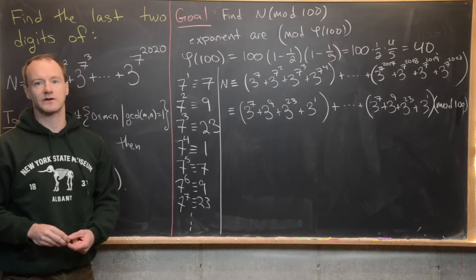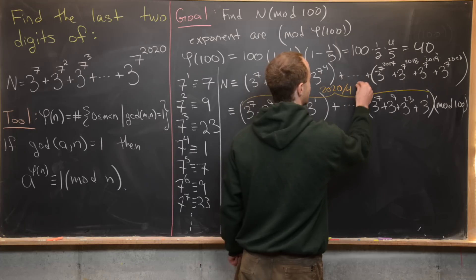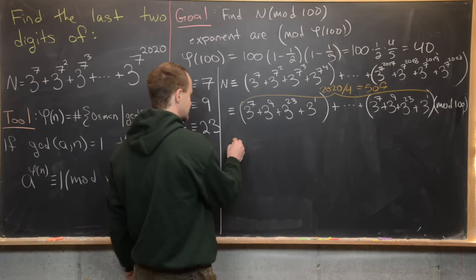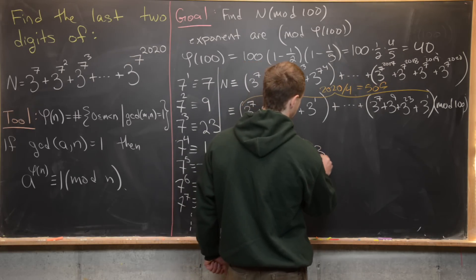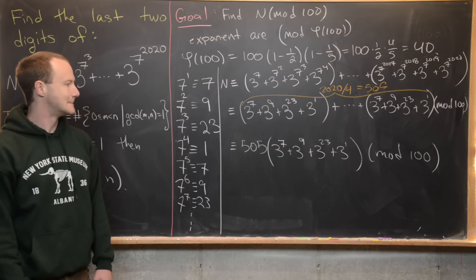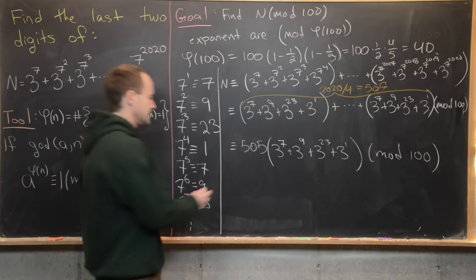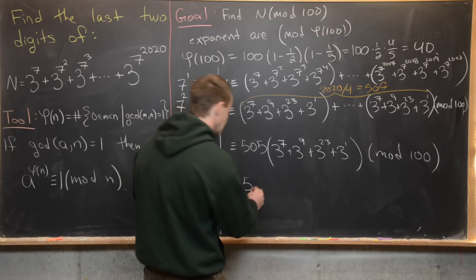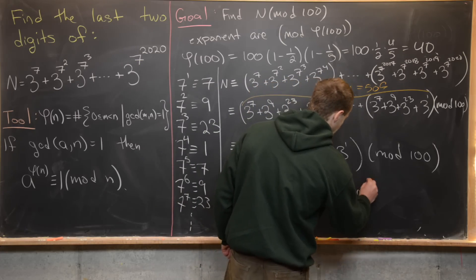We have exactly 2020 divided by 4 equals 505 such groups, all identical. So this is congruent to 505 times (3 to the 7 plus 3 to the 9 plus 3 to the 23 plus 3 to the 1), all mod 100. We can further simplify by noting that 505 mod 100 is 5, giving us 5 times that bracketed sum mod 100.